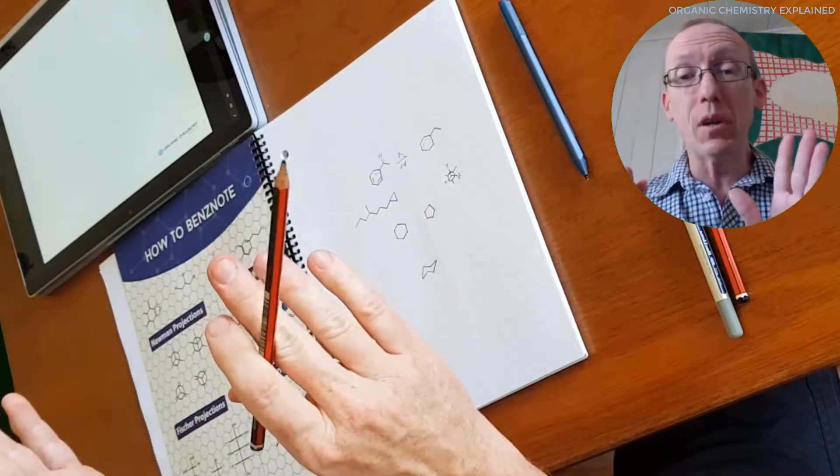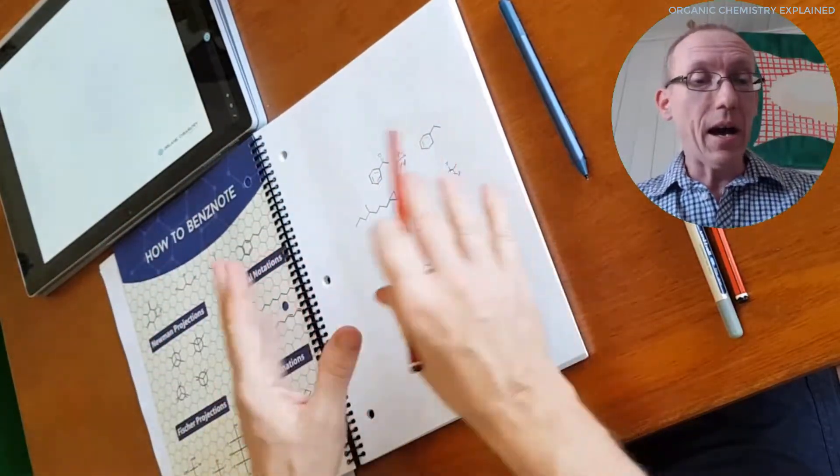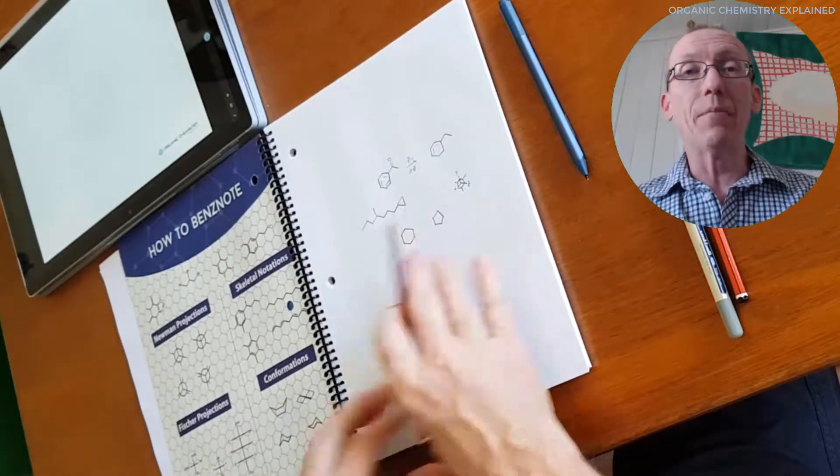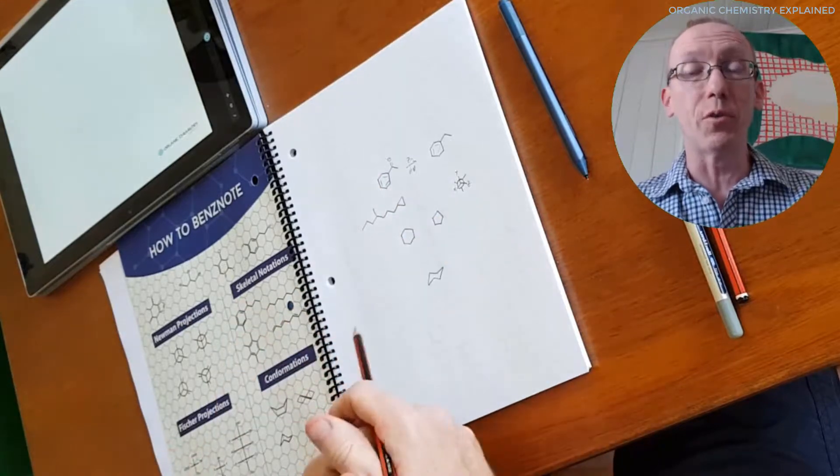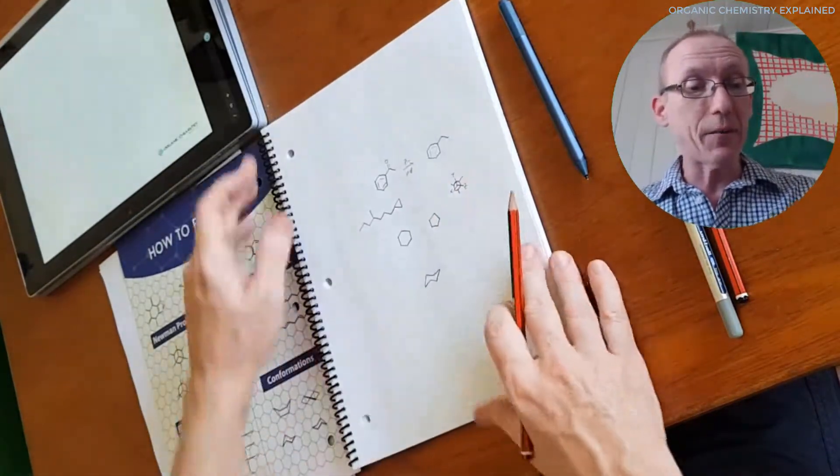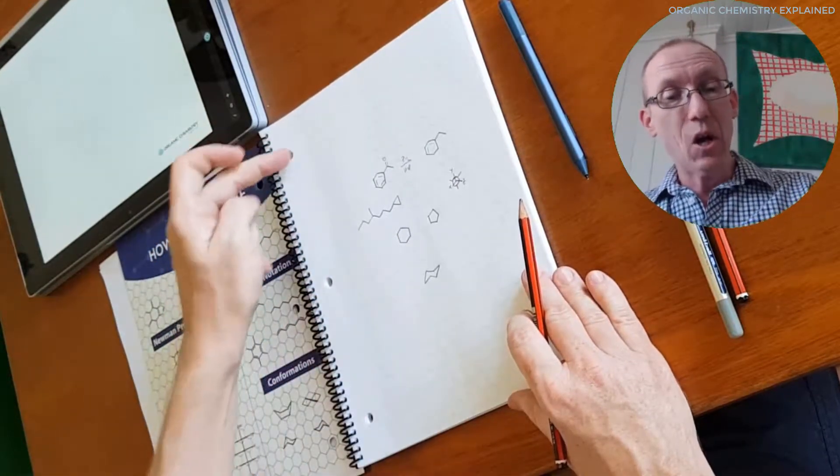But anyway, if you would like to have a hard copy notebook that has a hexagonal template for drawing your structures and your notes for your organic chemistry lectures, then I think Ben's note is a good option. And particularly if you like a spiral bound or if you like perforated pages with these hole punches.